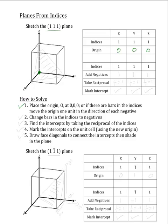Now the next step in solving this is to change any bars in the indices to negatives. Because there are no bars in these indices, they will remain as 1,1,1. Now the next step is to find the intercepts by taking the reciprocals of these indices. So we will take 1 over the x-index, which is 1, and that will equal the x-intercept 1.